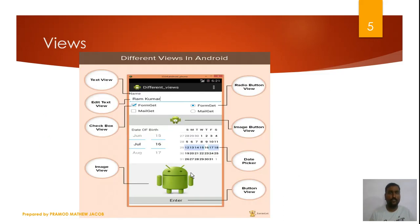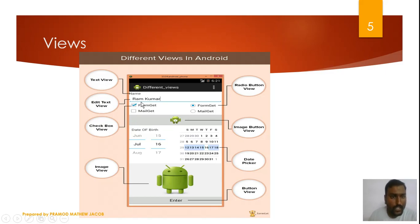In an example ViewGroup, we have a TextView for names. There is also a checkbox view — if we click this form, we can tick or untick it. There is also an ImageView for displaying images.